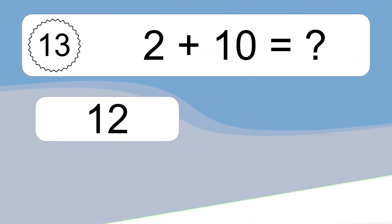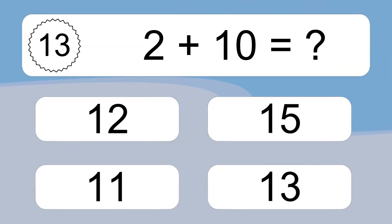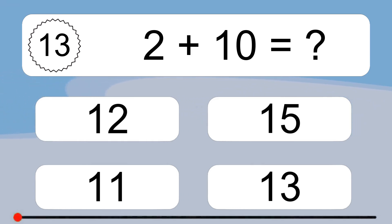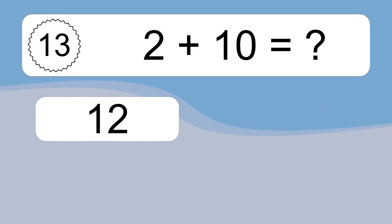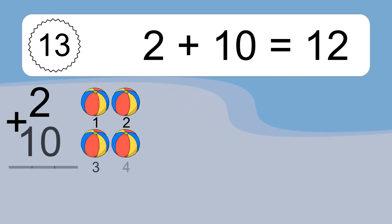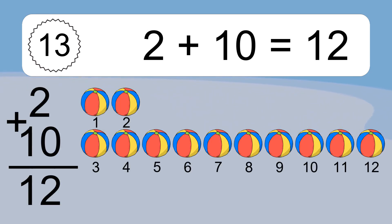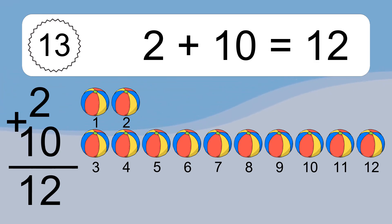2 plus 10 equals what? 2 plus 10 equals 12. Let's count it: 1, 2, 3, 4, 5, 6, 7, 8, 9, 10, 11, 12.